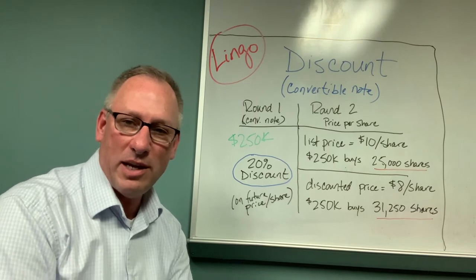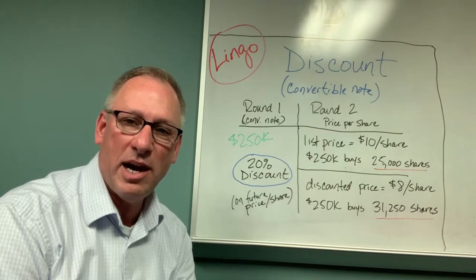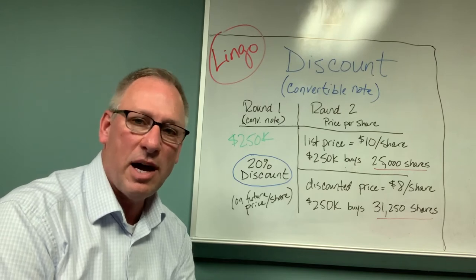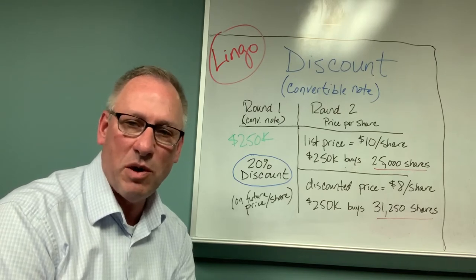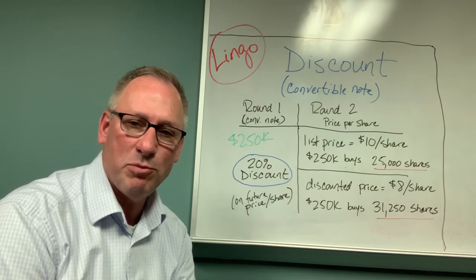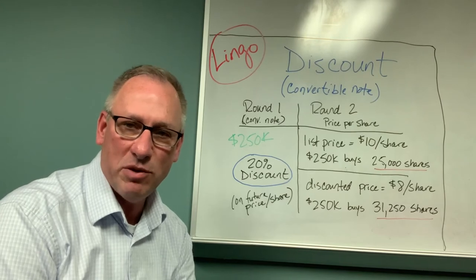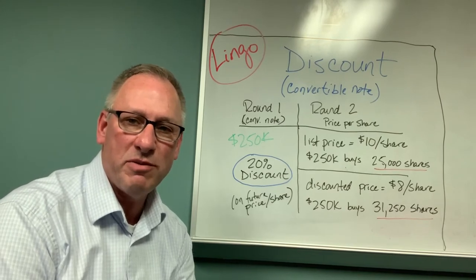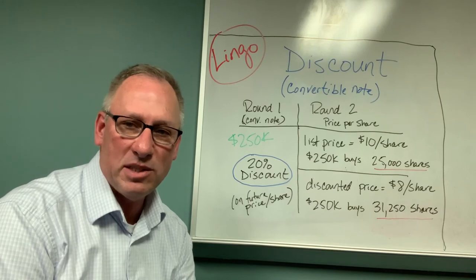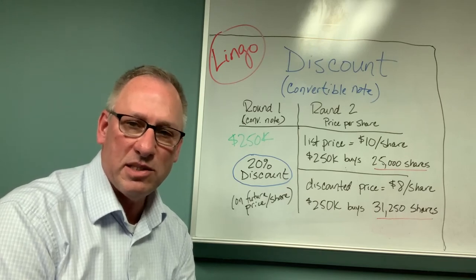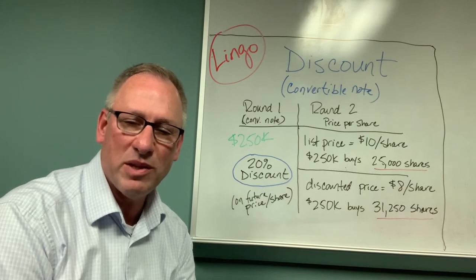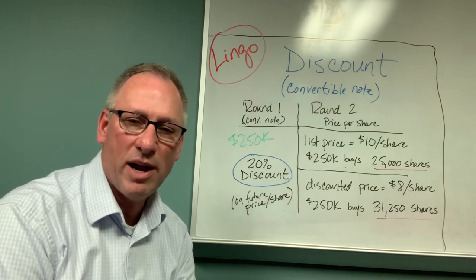Recall that a convertible note is a hybrid of debt and equity that allows the investor to first loan money to the company with the opportunity to convert that to equity later on, hopefully when there's another round of funding. And the reason that it's done is because it's so difficult to do a formal valuation for an early stage company when they don't have much track record.